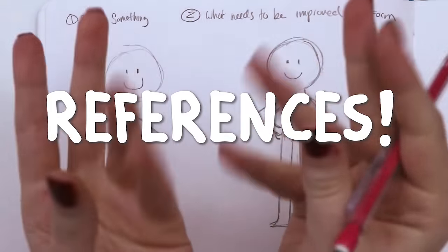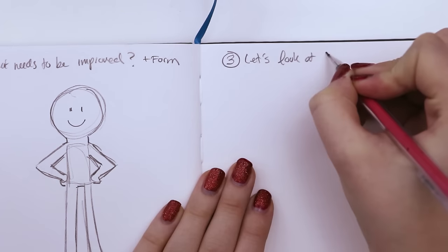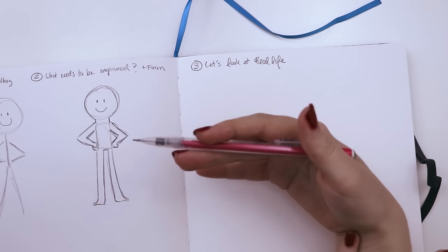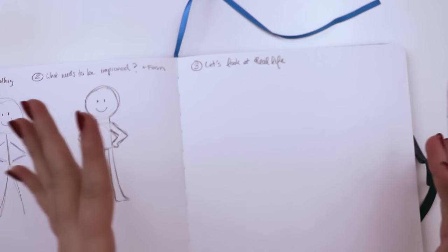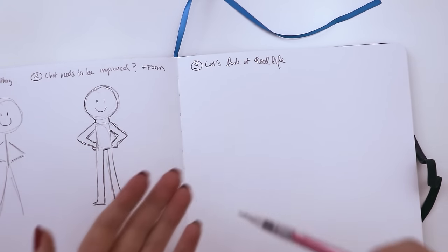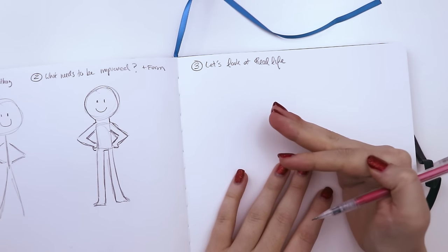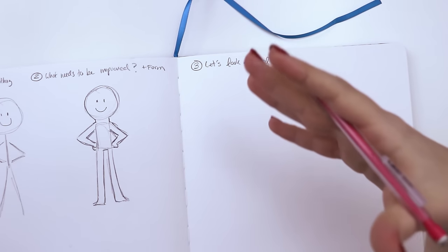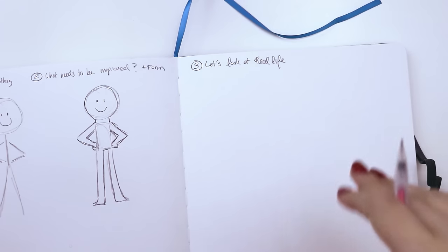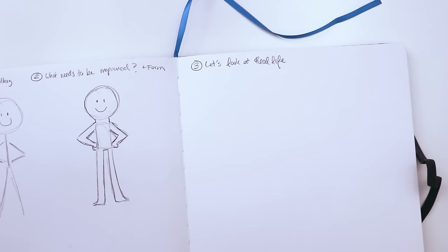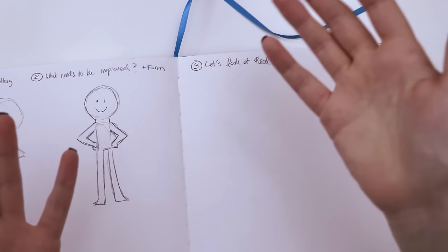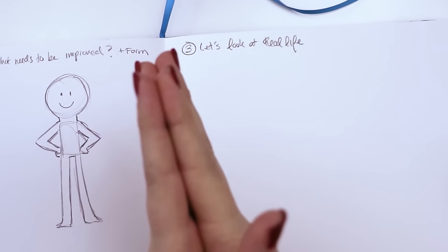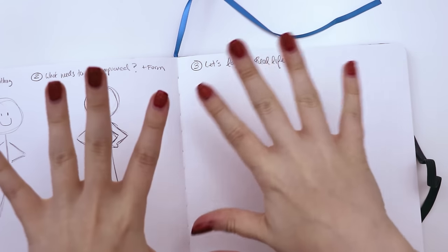Step three: let's look at real life. Art is a representation of your life, especially if you're drawing people. Don't be afraid to look at the source — if you're drawing people, look at people. Back in the DeviantArt days, there was a weird stigma about using references, as if drawing without one was an achievement. Using references is not cheating.